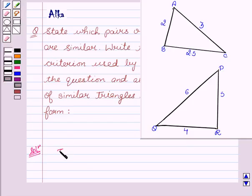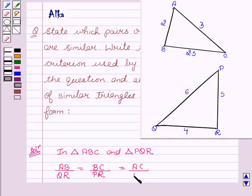In triangle ABC and triangle PQR, we see that AB upon QR equals BC upon PR equals AC upon PQ.